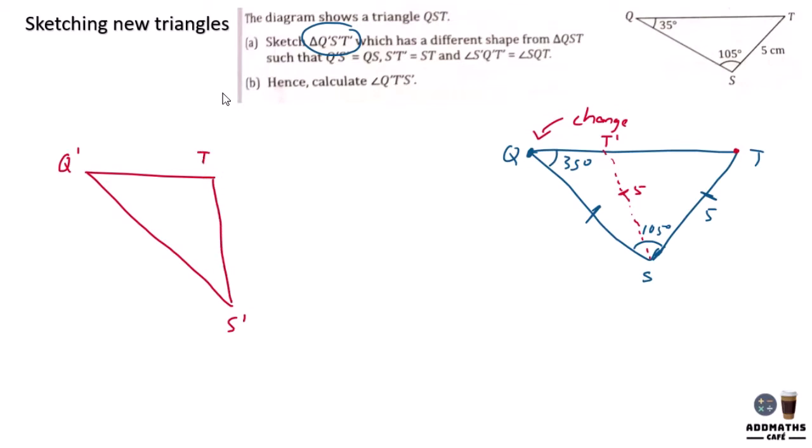So this is your Q prime, bring it down, this is your S prime, and this is your T prime. So this is the triangle. This is your 35 degrees and this will then be your 5cm. Given that you are calculating angle Q'T'S', you are required to find this angle. How should I find it? I know from this triangle, the original triangle over here, this is 105, this is 35.